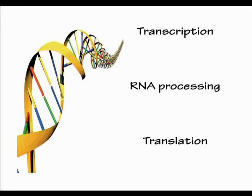That's completed the podcast content on translation. We've done transcription and translation, and there's a third process that's part of protein synthesis we need to talk about — RNA processing — so that's what we're going to cover now. See if you can remember why RNA processing doesn't always happen. The answer depends really on the type of cell involved. If we divide cells into two particular types, we would divide them into prokaryotes and eukaryotes. The difference is that a eukaryote has a nuclear membrane — a nuclear envelope — that surrounds the genetic material, and a prokaryote doesn't.